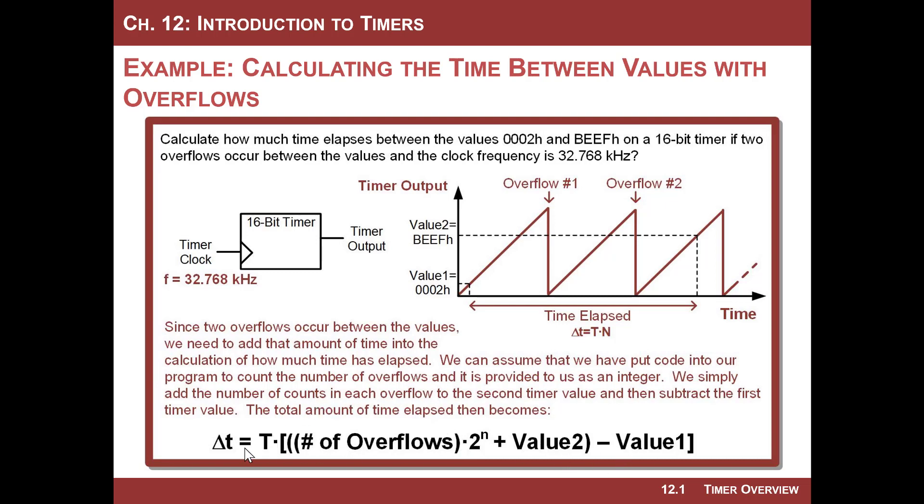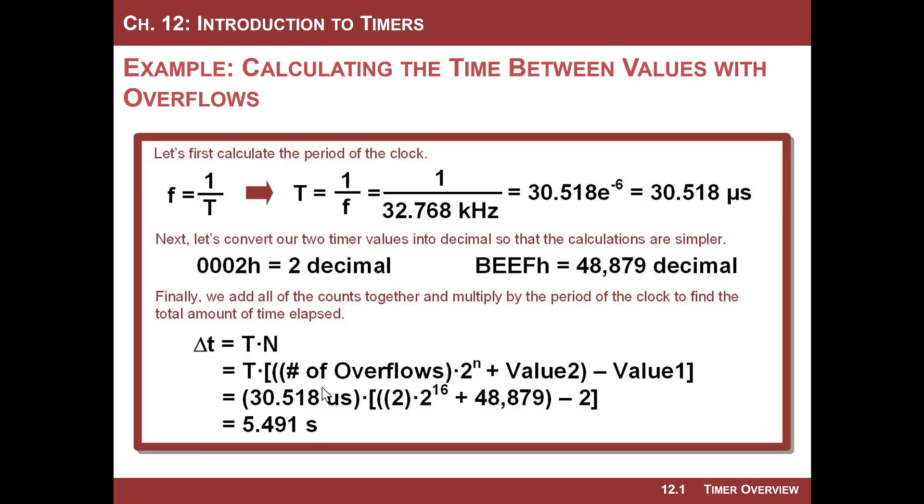But for right now, let's pull the clock period out front and say, okay, I've had at least the number of overflows times two to the N. In this example, it'd be two overflows. And then I'm going to add this value in here to take us from basically if I went zero to overflow, zero to overflow, and then I went up to that value. So that's where I add value2. And then I just need to come back a little bit and subtract off the starting value. So I go ahead and subtract that off, multiply the total number of counts that occurred by the clock period, and boom, I got it.